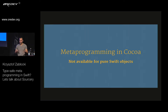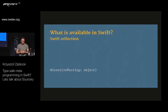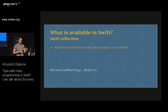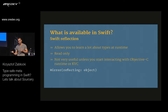Most metaprogramming in Cocoa is not available if you use pure Swift. If you inherit from NSObject, you can use some of those features. With Swift, the biggest thing they gave us is a reflection system — mirrors — which allow you to learn a lot about a type at runtime. But they are read-only, which means they're not very useful unless you use them to just read data. You cannot use them to change data. It's not something you can use to build a property grid — you can only read variables, not change them.